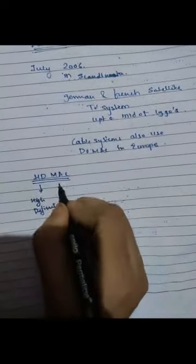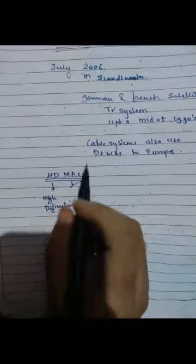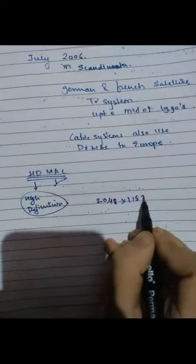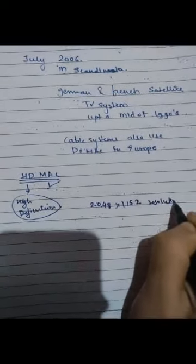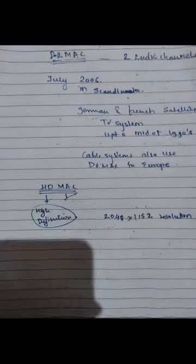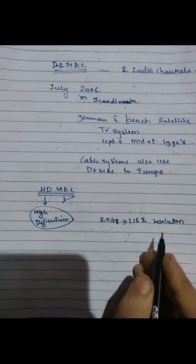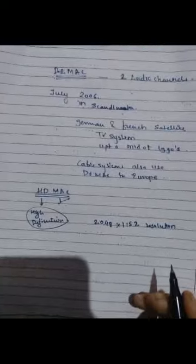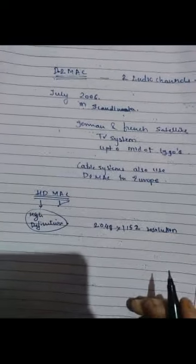Now talking about HD-MAC — HD stands for High Definition. This variant of MAC was developed for HD TV transmissions. It was possible to obtain a resolution of 2048 multiplied by 1152 with the help of HD-MAC. With this we have seen all the MAC variants that come with the MAC standard, and we have finished the basics of MAC signal. We will also see the MAC signal encoding format next.